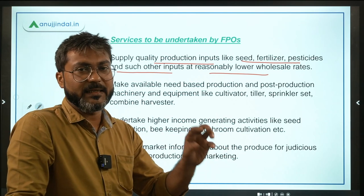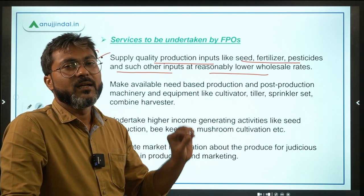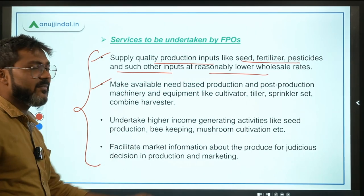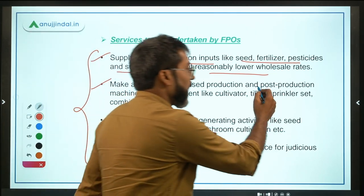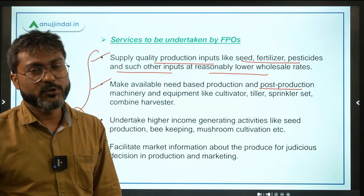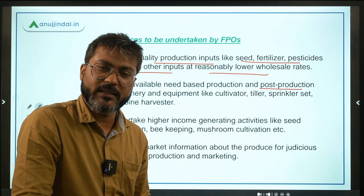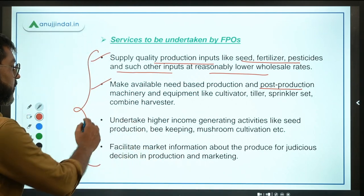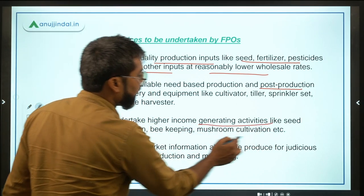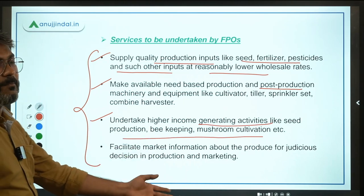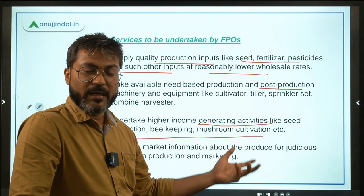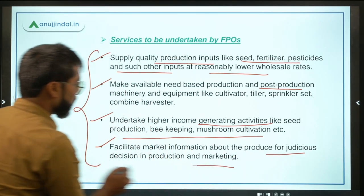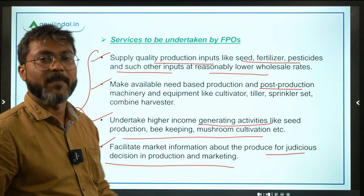All inputs required for agriculture will be provided by the Farmer Producer Organization. They will also make available land-based production and post-production infrastructure — machinery and equipment required for harvesting and post-production activities. FPOs will undertake higher income-generating activities like seed production, beekeeping, and mushroom cultivation.